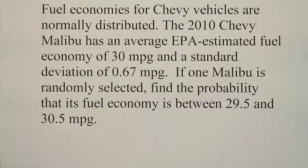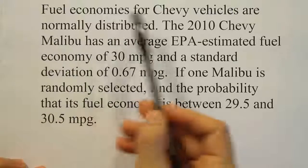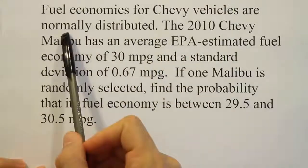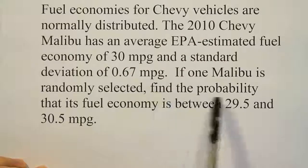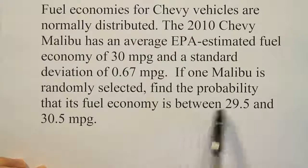In this problem we're looking at a bell curve problem because it says fuel economies for Chevy vehicles are normally distributed. They're asking us for a probability - find the probability that its fuel economy is between these two values.